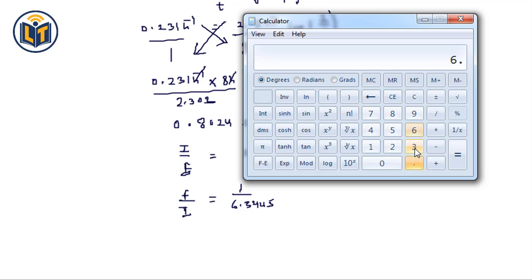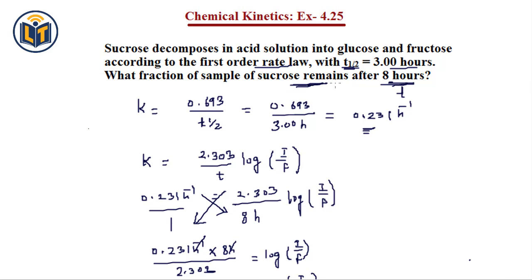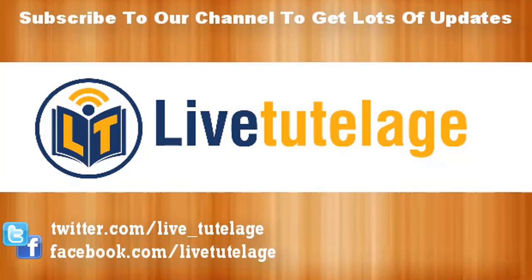Calculating 1 / 6.3445, we get 0.1576. Rounding to three significant figures — since the digit after 7 is 6, which is greater than 5, we round up — giving 0.158. Therefore, the fraction of sucrose remaining after eight hours is 0.158, calculated using the first-order rate law formula.